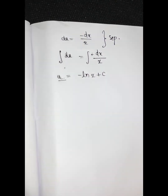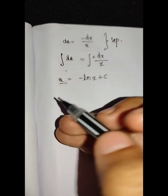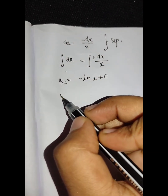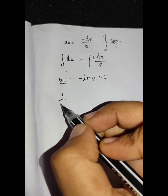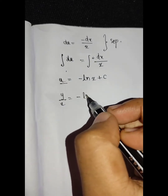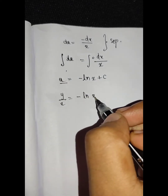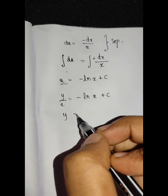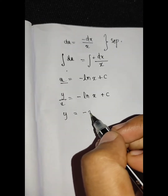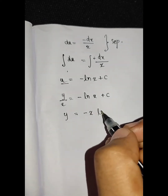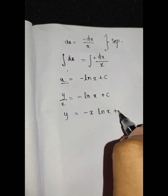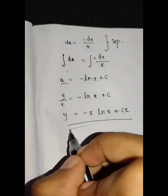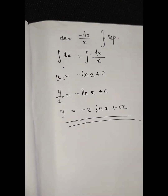We substitute back using y/x for u. So y/x equals minus log x plus c, which gives the final solution y equals minus x log x plus cx.